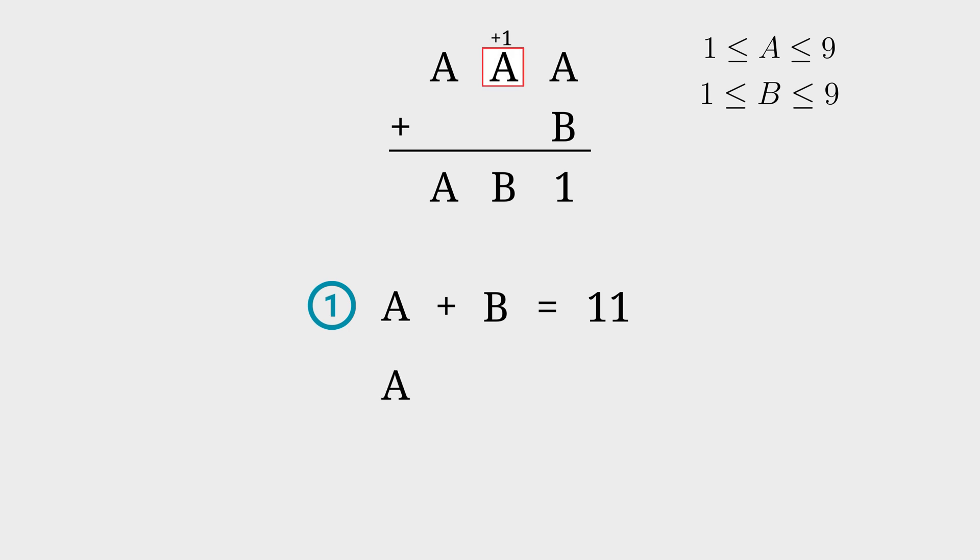Moving on to the next step, we have A plus 1, because we carry over the 1 from the previous addition, and that is equal to B. We can call this equation equation number 2.